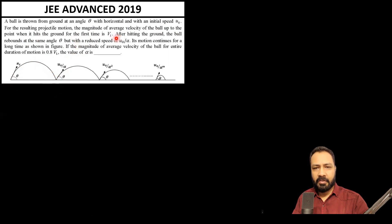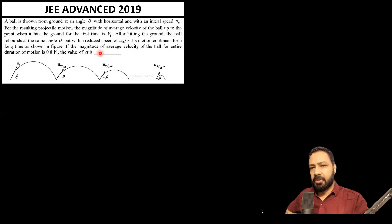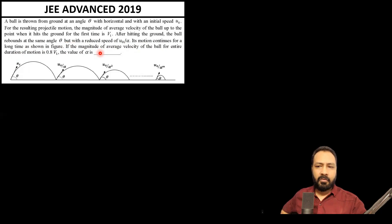After hitting the ground, the ball rebounds at the same angle theta but with a reduced speed of u-naught divided by alpha. This motion continues for a long time as shown in the figure. If the magnitude of the average velocity for the entire duration of motion is 0.8 v1, what is the value of alpha?